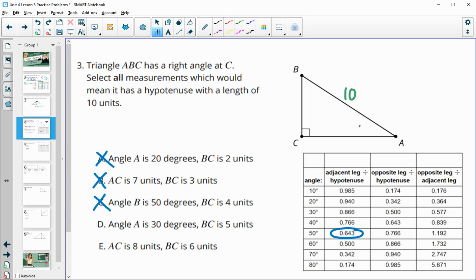Part D says that angle A is 30 degrees and side BC is 5 degrees. So this one, if this would be a 30-60-90, which it is if this is 30, then the short side should be half the hypotenuse. The 5 is half of 10, so this one is good.